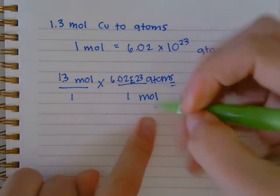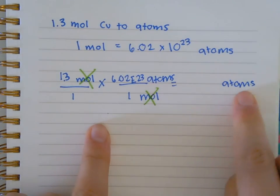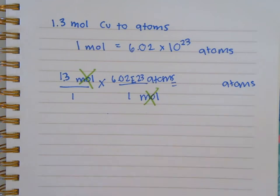Now I can see that I have moles at the top, moles at the bottom, so these ones will cancel out and I'm only left with atoms. The only thing I have left to do is just figure out the actual number.